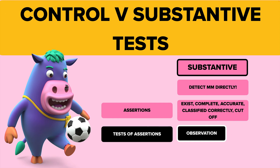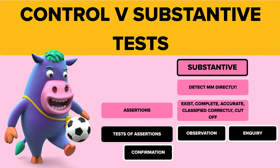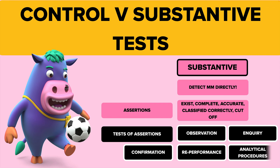The substantive test procedures are: Observation — observing something to test that it actually exists. Enquiry — asking management or a lawyer about something. Confirmation — getting your own audit evidence, ideally confirmed from a third party. Recalculation or re-performance — re-performing the adding up of something yourself to make sure it's right. And finally, analytical procedures — for example, looking at receivables and asking why they're different from this year to last year if there's a big difference. That covers substantive tests.